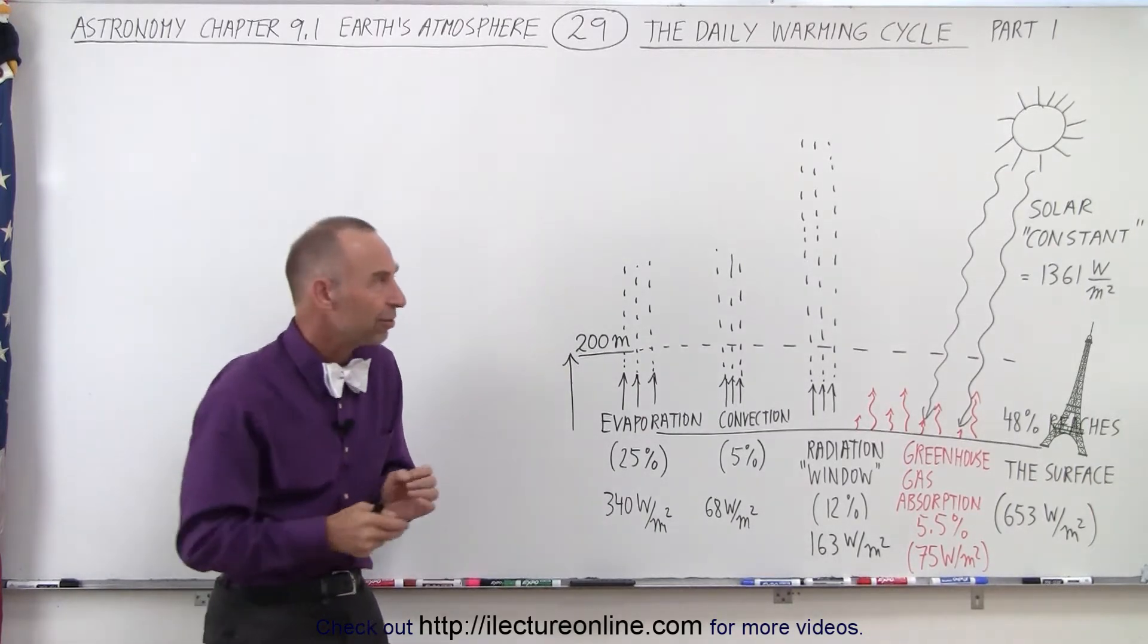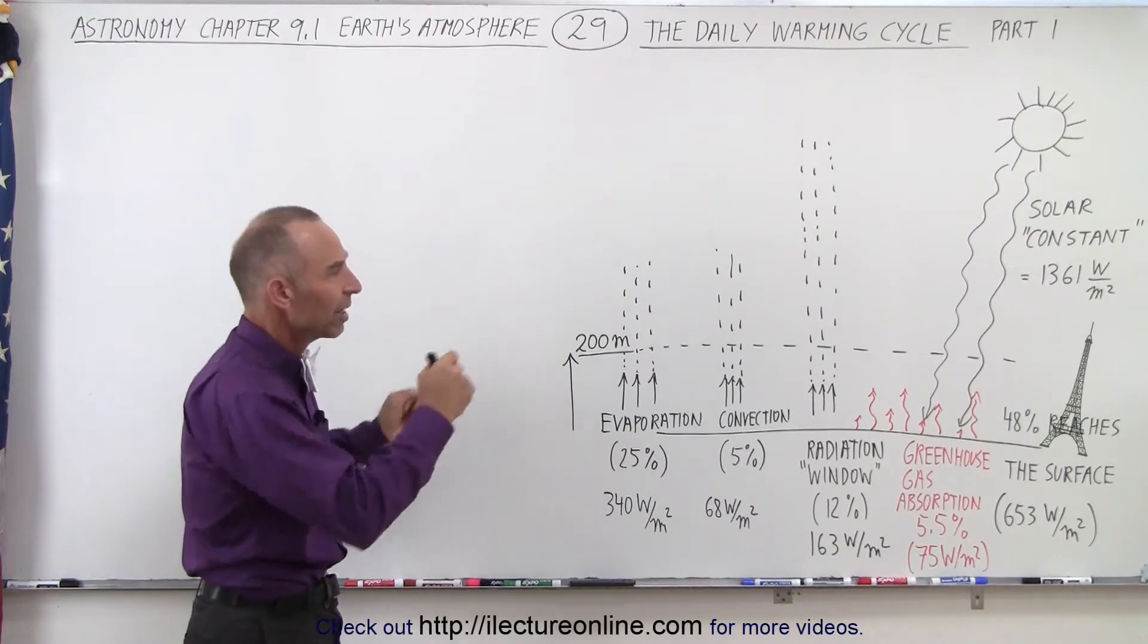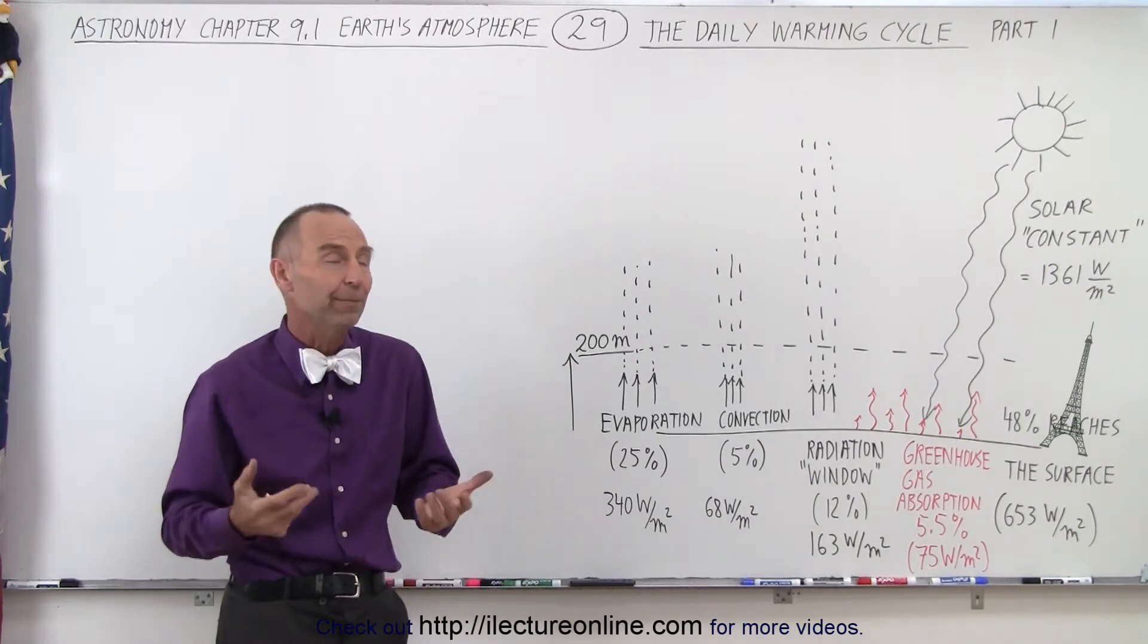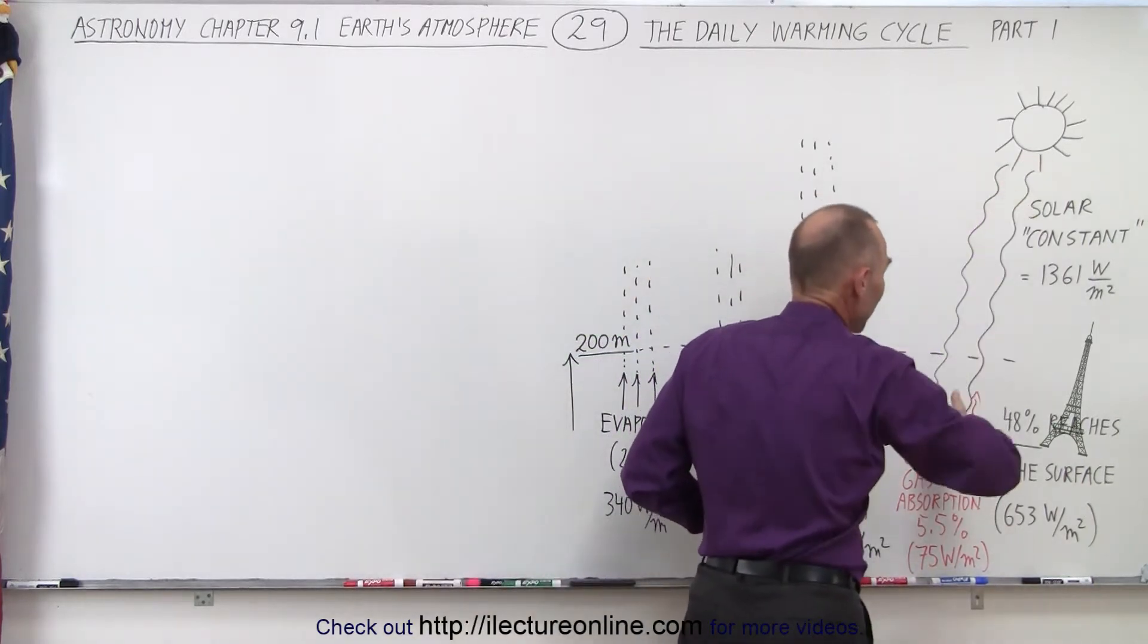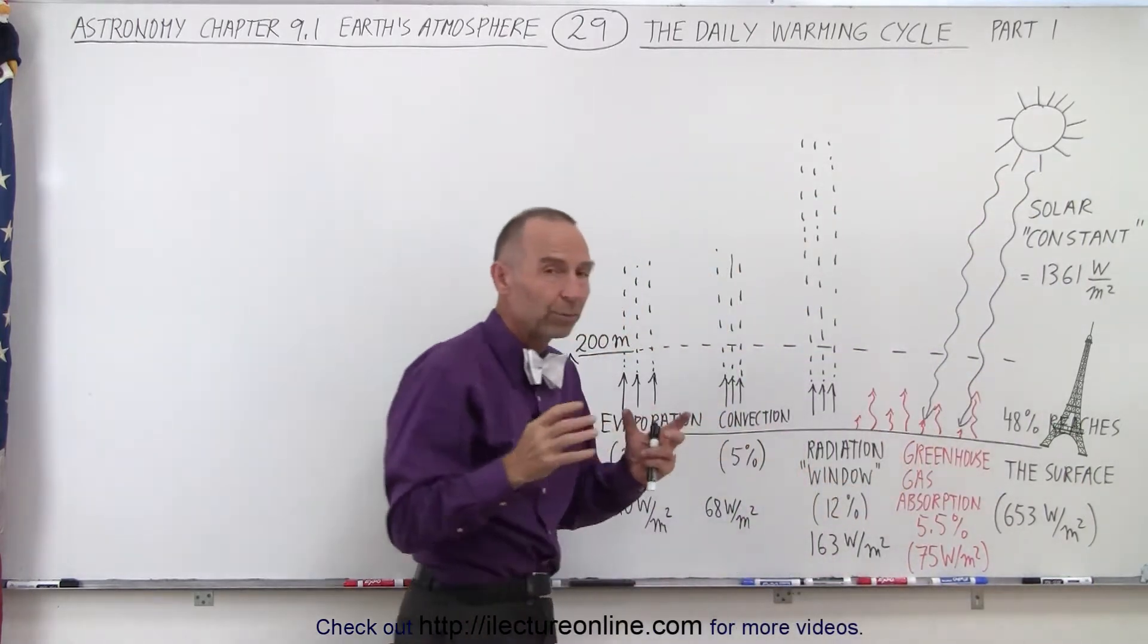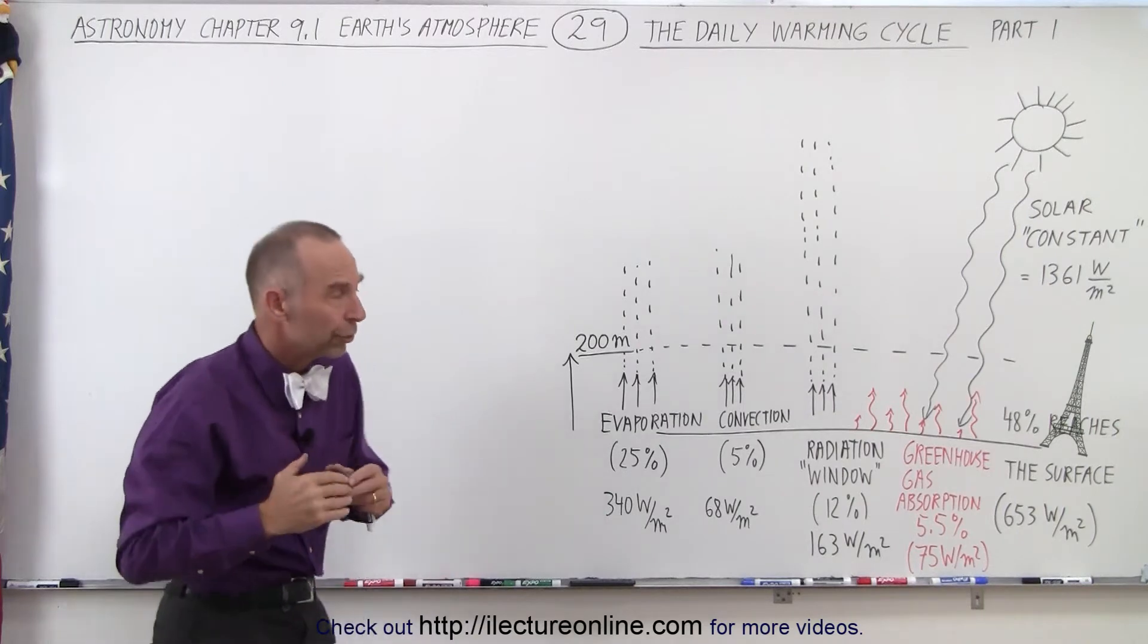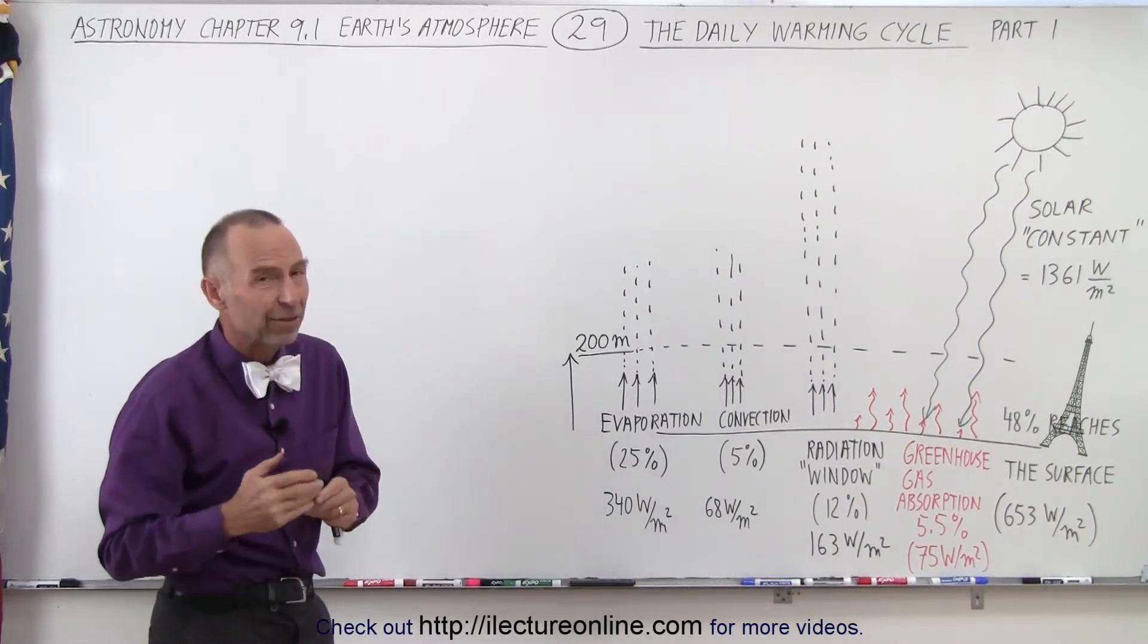To understand that process, we need to go back to the basic concept of where that energy comes from. The energy obviously comes from the sun. We have about 1,361 watts per square meter that reaches the Earth on a continual basis.